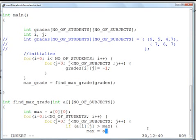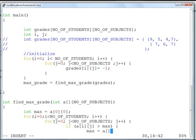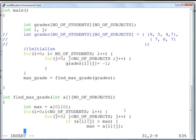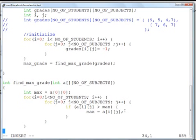If a[i][j] is greater than max, then max is equal to a[i][j]. My if statement is complete. My first for loop is complete. My second for loop is complete.